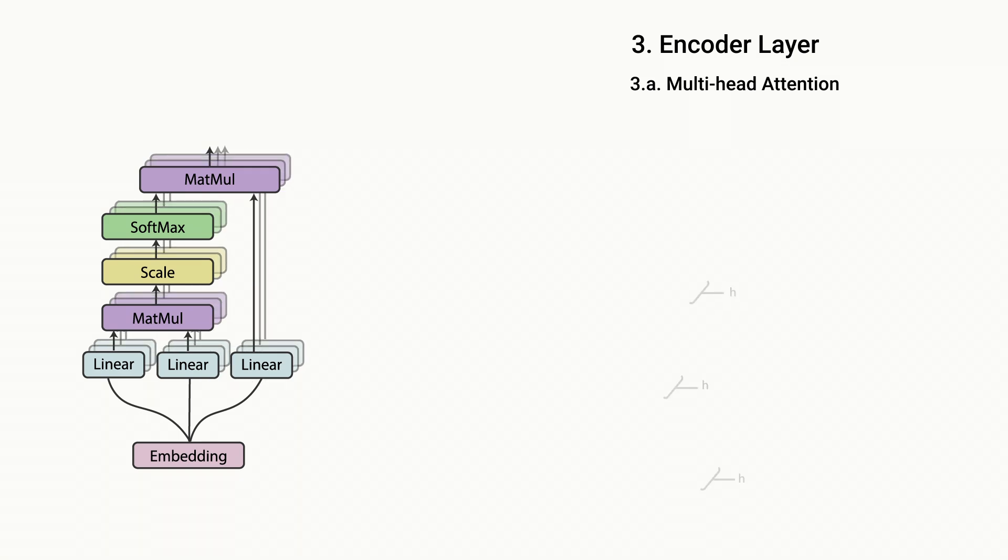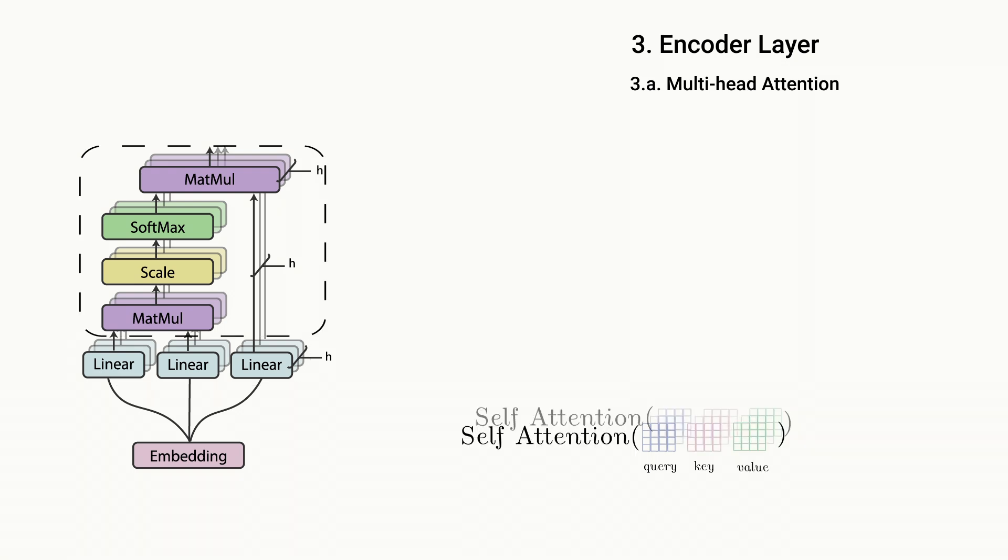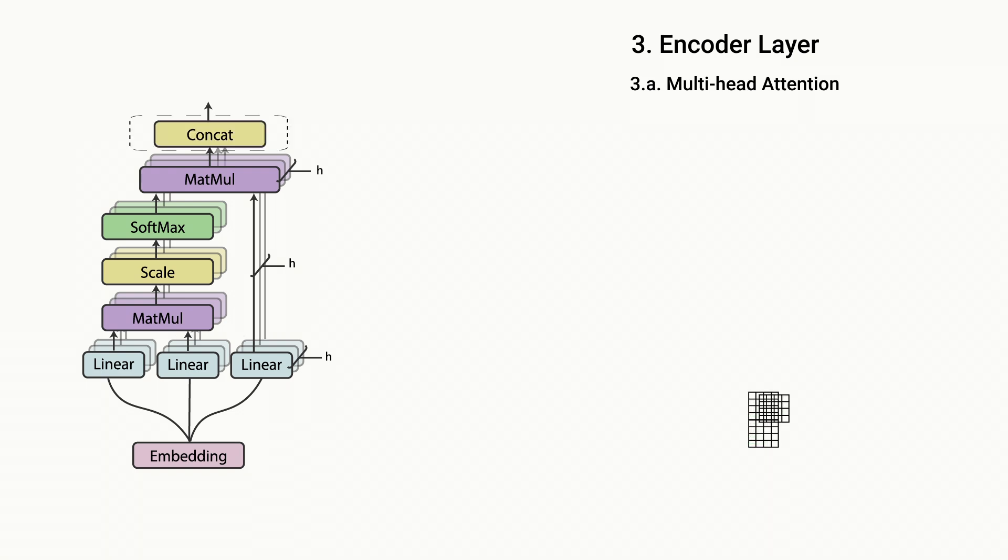And this is where the name multi-head attention comes from. This combination is done by copying the query, key, and value matrices each number of times, computing the self-attention operation over each copy, concatenating each attention output together, and then linearly transforming it into the expected dimensions.